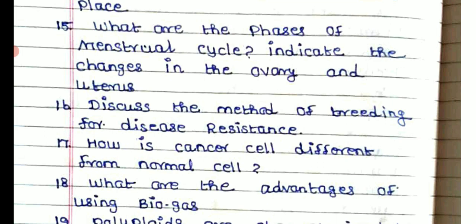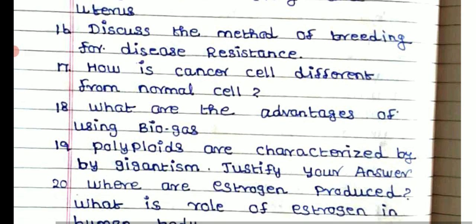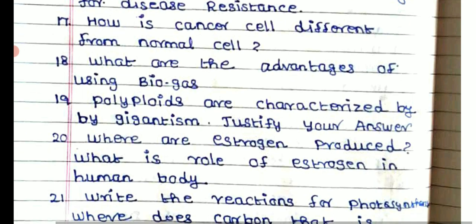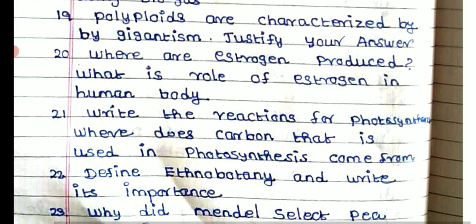What are the phases of the menstrual cycle? Indicate the changes in the ovary and uterus. Discuss the methods of breeding for disease resistance. How can a cancer cell be differentiated from a normal cell? What are the advantages of using biogas? Polyploids are characterized by degenerate symptoms — justify the answer. Where are estrogens produced?